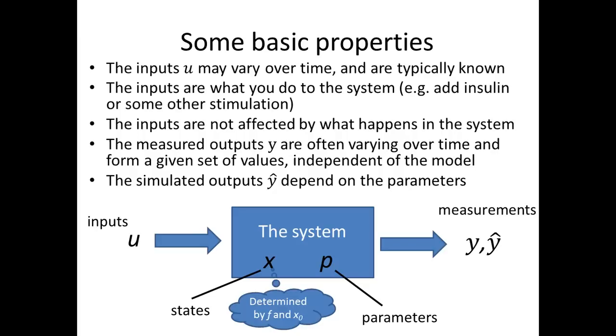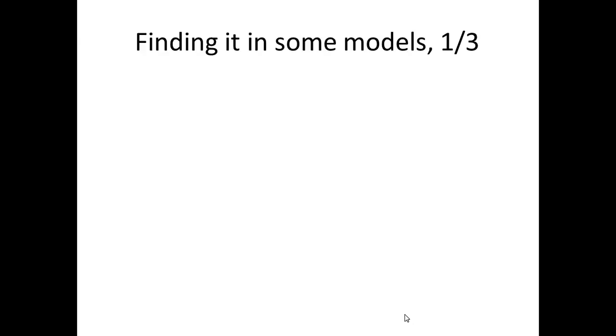The states you can calculate by using this function f, which gives the derivative at each time point if you know the states, and x0 are the states at the starting point. So this allows you to start, this allows you to calculate the derivative, and then you just go in the derivative and so on, and then you get the states. Once you have the states and the parameters, you can combine all of these things to get the simulated output by using this function g. These are all the things. There's nothing more that goes into the definition of the model as we do it now in this course using differential equations.